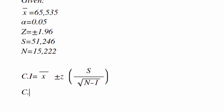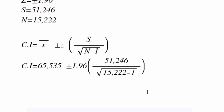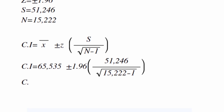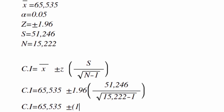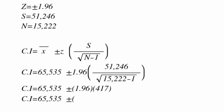Step 3: Let's substitute our givens into the equation. CI = 65,535 ± 1.96 × (51,246 / √(15,222 − 1)). Step 4: Let's calculate and find the confidence interval. The confidence interval equals 65,535 plus or minus 817.